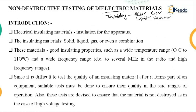These materials should possess good insulating properties over a wide range of operating parameters, such as a wider temperature range. When we say a wider temperature range, it is from zero degrees Celsius to 110 degrees Celsius. That particular insulating material should have a withstand capacity of 110 degrees Celsius. This rise in temperature occurs due to the flow of current in the medium or in the power system.